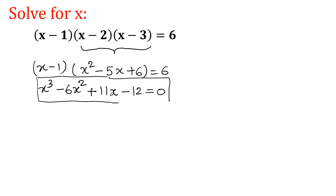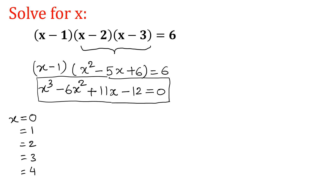Now I have to consider two brackets, meaning if we are capable of finding one factor, let me find out one factor first. I am going to put x equal to 0, 1, 2, 3, and 4, and let me see which value satisfies the equation.